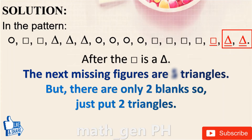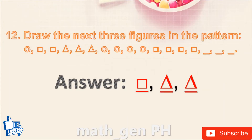There are only two blanks, so just put two triangles. Answer: one square and two triangles.